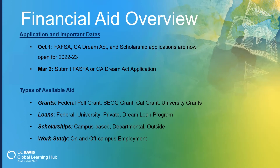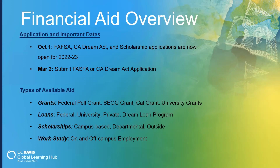When you complete the FAFSA or Dream Act application, you are applying for several types of aid. Grants are gift money you don't pay back, available through the federal government — including the federal Pell Grant and SEOG Grant — as well as the state CAL Grant and university grants for qualified students. Most grants are only available to students who submit by the March 2nd priority deadline. In addition, you become eligible for loan eligibility — a combination of federal, state, university, or private loans — as well as potential scholarship opportunities through campus, departmental, or outside sources, and work-study. Work-study is not necessarily available while abroad, but could be used while preparing for your abroad experience to save additional money.